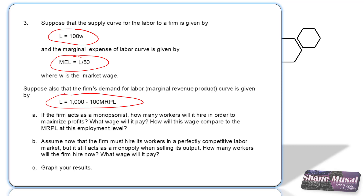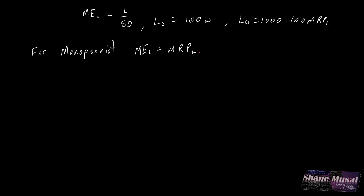Part A says: if the firm acts as a monopsonist, how many workers would it hire in order to maximize profit, what wage would it be, and how will this wage compare to the marginal revenue product of labor, or the MRPL, at this employment level? We know for a monopsonist, the marginal expense of labor must equal the marginal revenue product of labor. So we need to solve the MRPL, and we will use the demand equation first.